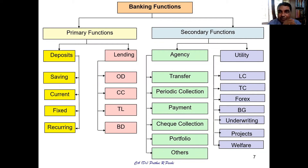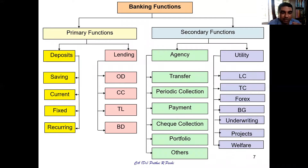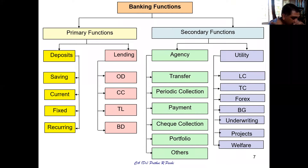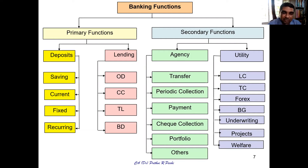CC stands for cash credit. Then TL stands for term loan, and BD is for bill discounting. So these are various lending services available: overdraft, cash credit, it might be a short-term loan, long-term loan, or medium-term loan, and bill discounting — which you may have studied in accounting as well, how a bill can be discounted.